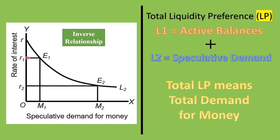The speculative demand for money, L2, shows an inverse relationship with the rate of interest — it is a downward-sloping line. When the rate of interest is high (R1), speculative demand is low (M1). When the rate of interest falls, speculative demand for money increases, because people prefer to hold cash rather than lend at low interest.